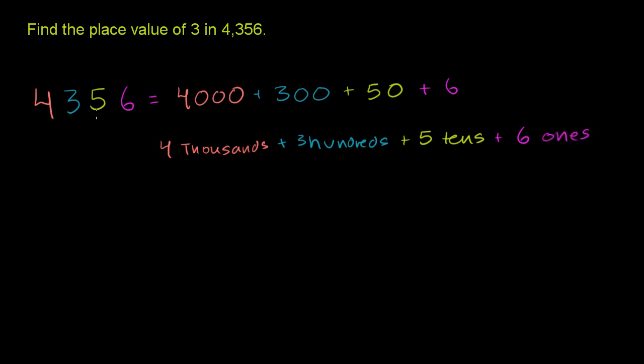So if we go back to the original number, 4,356, this is the same thing as—let me write it down—4 thousands, 3 hundreds, 5 tens, and then 6 ones.